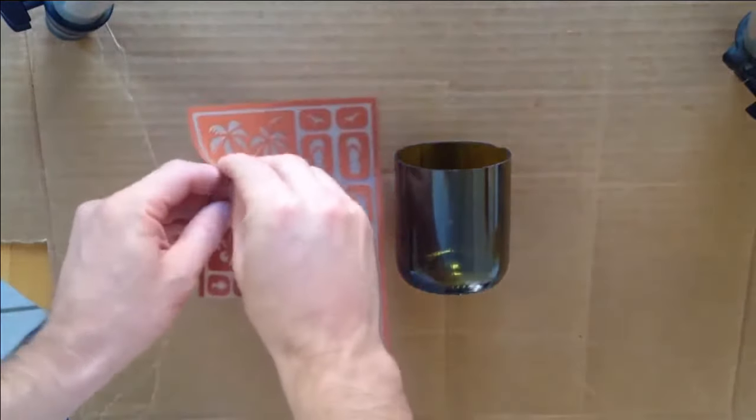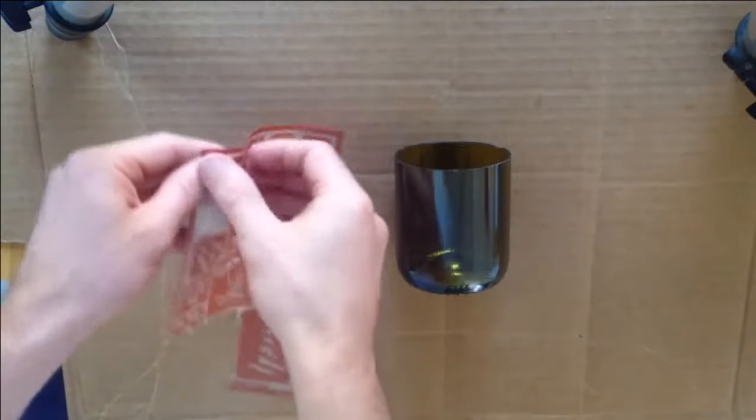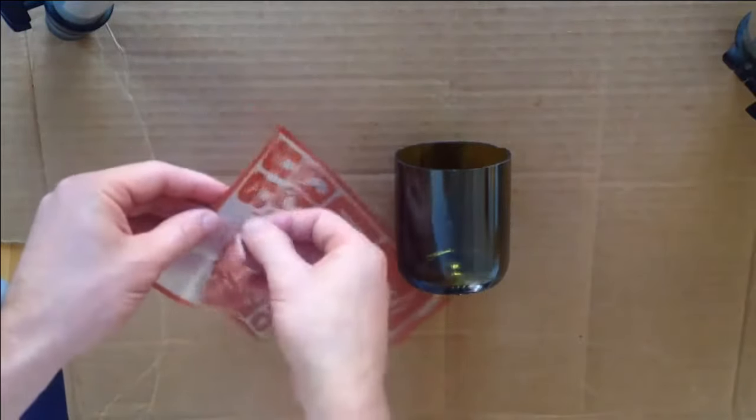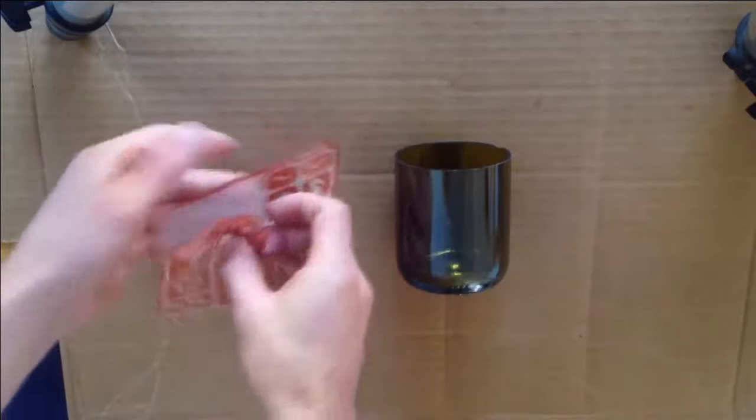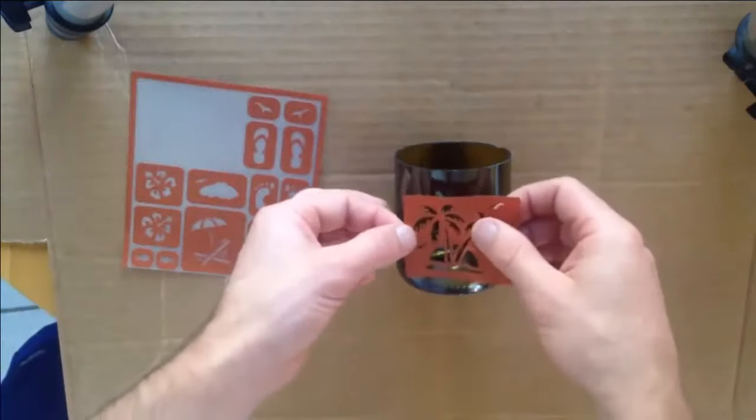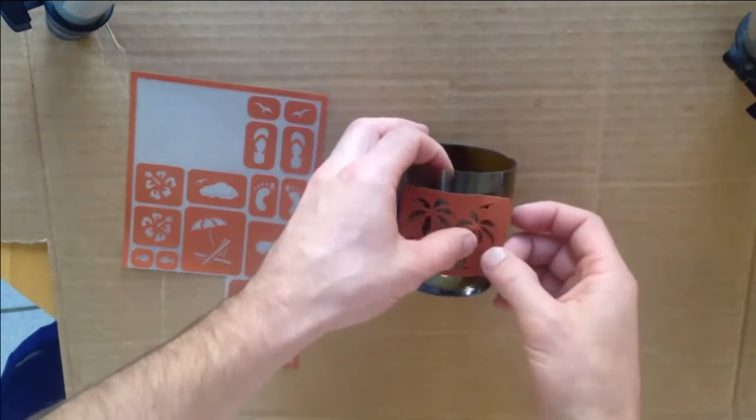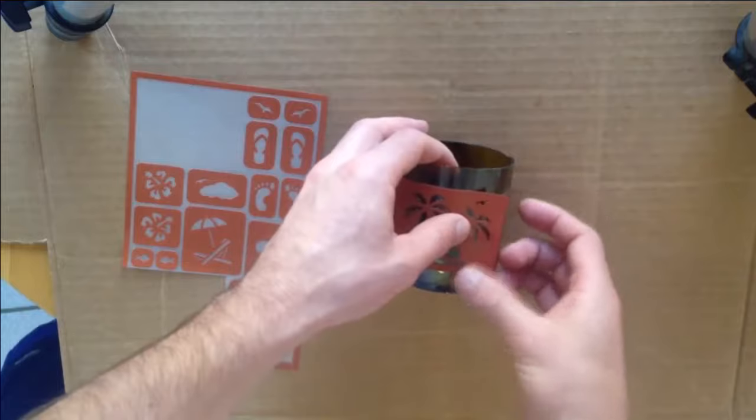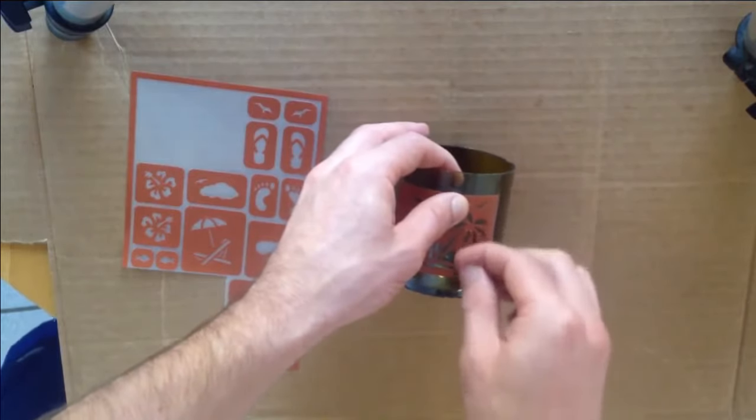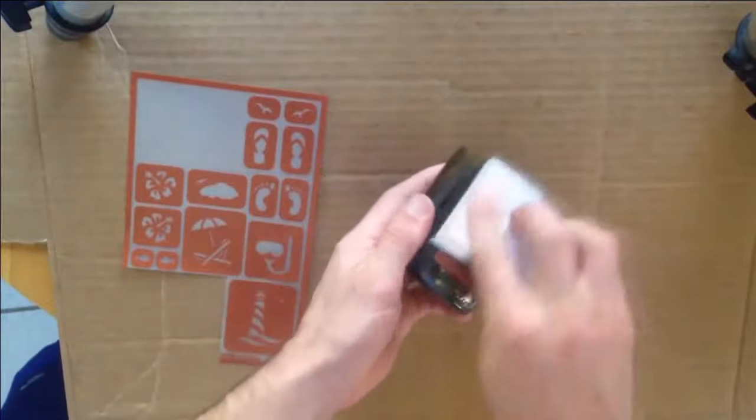Now simply peel off the desired stencil from the carrier sheet and position it on your item. At this point, rub a piece of paper over the stencil while pushing lightly. This will ensure that the stencil edges are completely adhered to the item, so no cream or paint can get under the stencil.